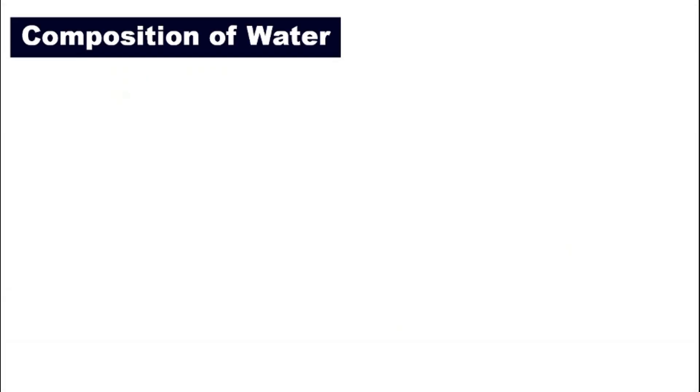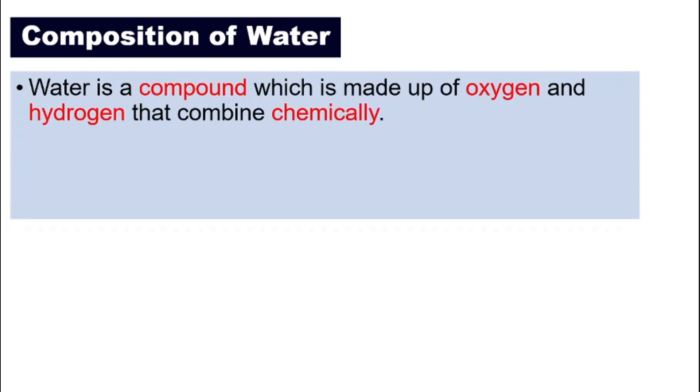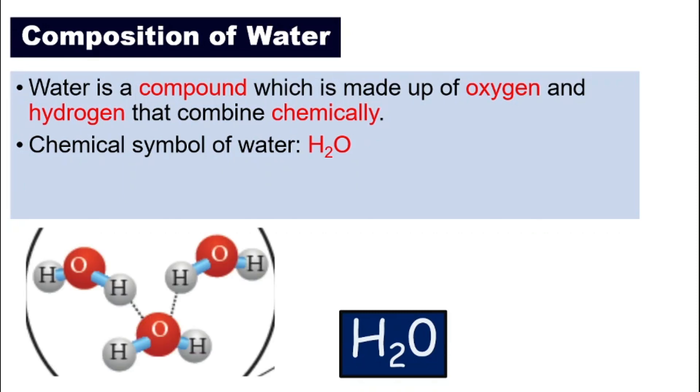So, composition of water. What is the water made of? Water is actually a compound which is made up of oxygen and hydrogen. Very important, oxygen and hydrogen that combine chemically. And the chemical symbol of water is H2O. If you look at the illustration here, you can see that this is one unit or this is one molecule of water. It has two hydrogen and one oxygen. That is why we say H2O. That means two hydrogen and one oxygen. And they are combined chemically.